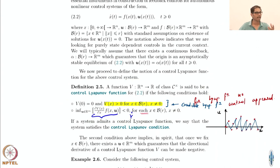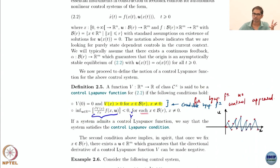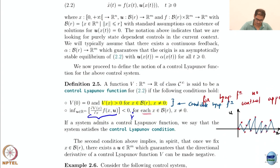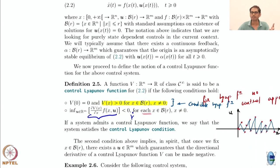In the absence of control you had the negative definiteness condition. Here what we are saying is that you can actually find some control u such that you can make the derivative negative for every state. That is really what the CLF is — it says that this function allows you to find a control such that V̇ is negative, and you have to do this pointwise. The x here is fixed, so you are taking infimum only over the control.